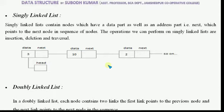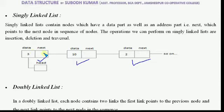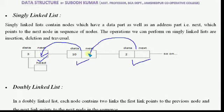You can see in the figure, we have three nodes: node 1, node 2, and node 3. In singly linked list, apart from the data value, we have an address part which contains the address of the next node.